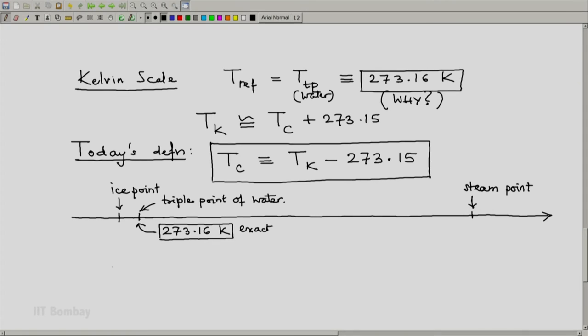And because of this definition, on the Celsius scale, this turns out to be 0.01 degree Celsius. Again, exact because of the definition of the Celsius scale as it stands today.